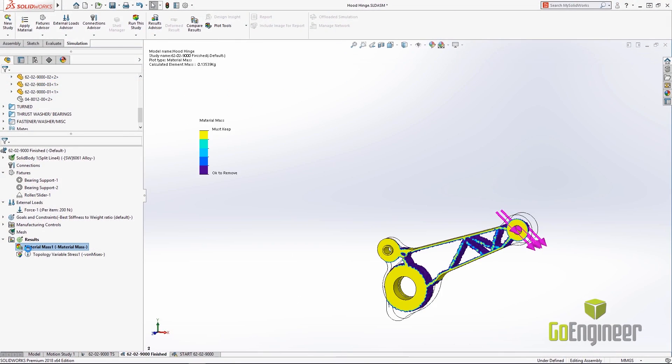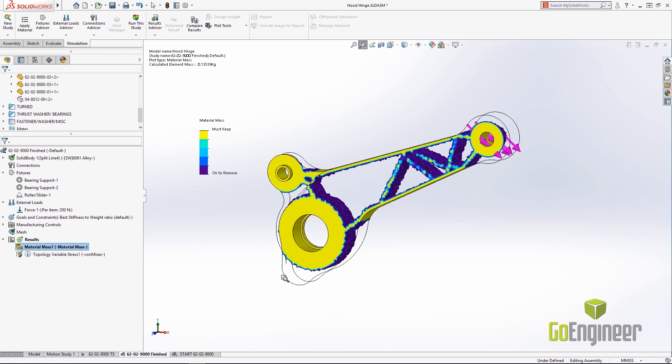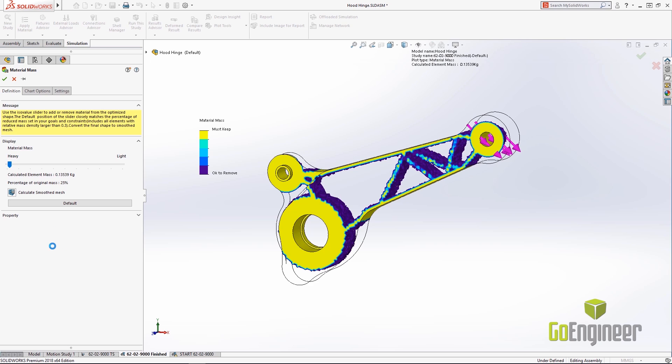Once the component is optimized, this is what it looks like. It leaves material only in the areas that really resist the loading conditions. And you are actually able to use a slider in order to pick how much material you want to leave from the component.